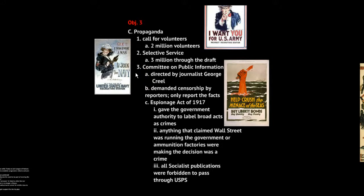The Committee on Public Information was directed by a journalist — a government-run industry turned over to private groups. They hired 75,000 men to travel the United States giving speeches. These speeches would be given in theaters just before a movie began, taking four minutes to deliver — updates on how the war was going and how people could help at home. These men were called four-minute men. The Committee on Public Information also encouraged passage of the Espionage Act, making it a crime to criticize the government, the war, or the president. Any claim that Wall Street was behind the war to secure loan repayments was seen as sedition.